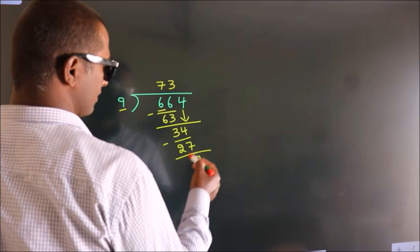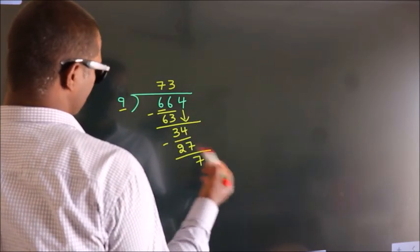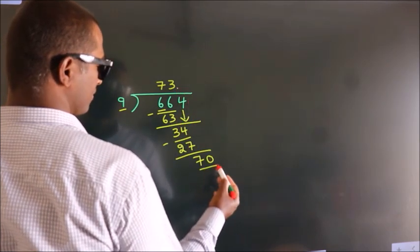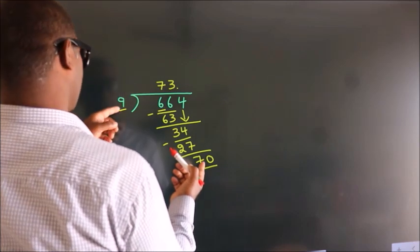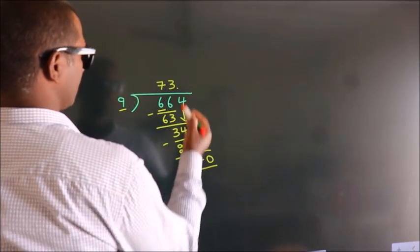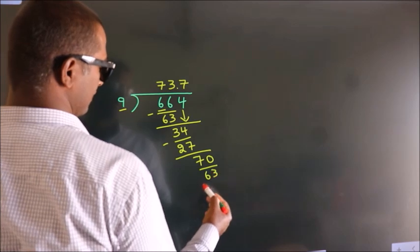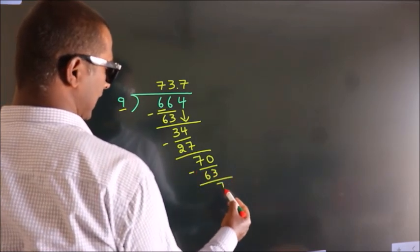After this, no more numbers to bring down. So what we do is, we put a dot and take 0. So 70. A number close to 70 in the 9 table is 9 times 7, which is 63. Now we subtract and we get 7.